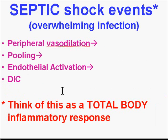In septic shock, the sequence begins with peripheral vasodilation and loss of vascular tone, causing pooling of blood and loss of circulation. This abnormal flow activates the endothelium, which can trigger massive DIC. If you think of it as a total body inflammatory response — that is exactly what septic shock is. We will continue with more types of shock in the next segment.